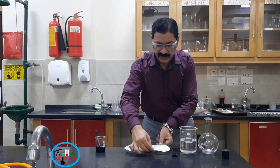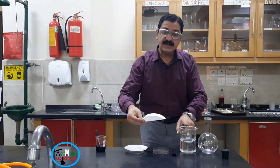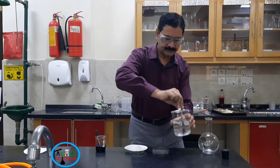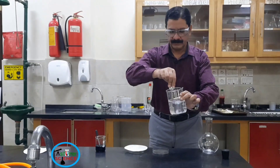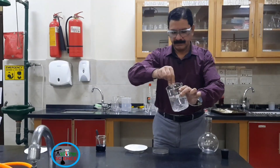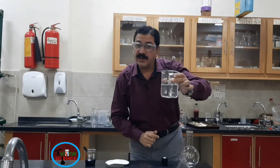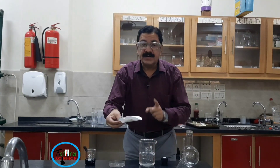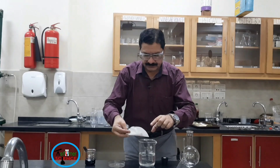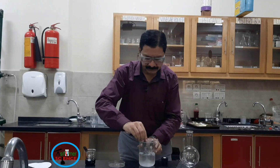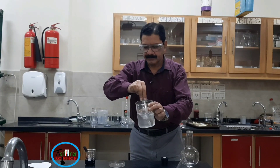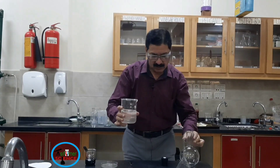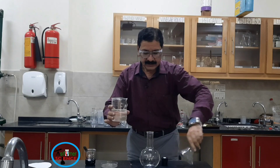Now I am going to add 8 grams of sodium hydroxide in 300 ml of water. Sodium hydroxide completely dissolves in the water. Now I am going to add 10 grams of glucose in the same solution. Glucose also dissolves in the solution.